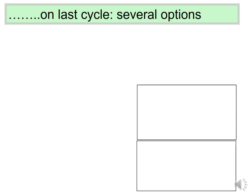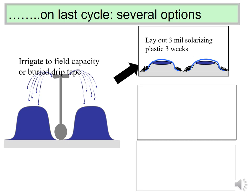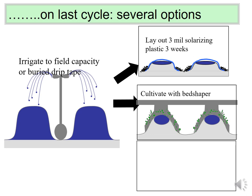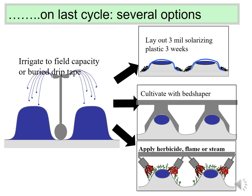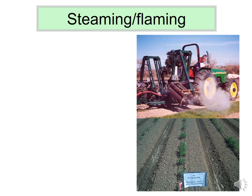Several other options exist for organic systems during that last irrigation cycle when purging the weed seed bank. One option is to lay down solarizing clear plastic over the irrigated beds — this is the beginning of solarization. Another option is using a shallow bed shaper as a final cultivation, which limits how many weed seeds get moved up. A third option is using an organic herbicide, flame, or steam.